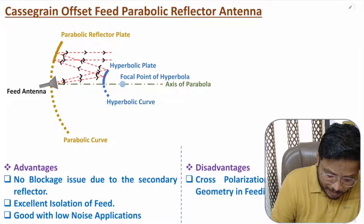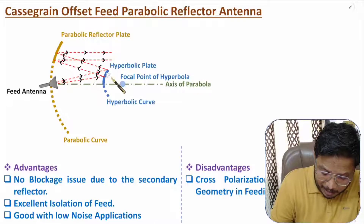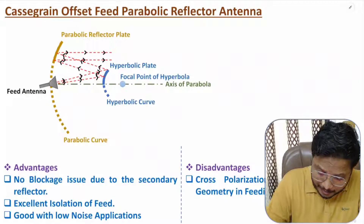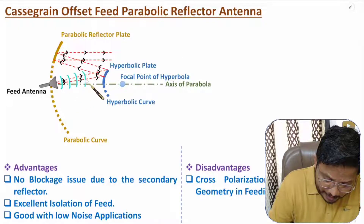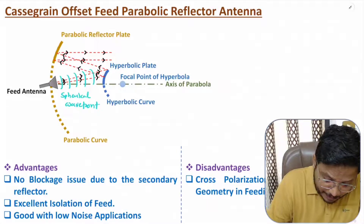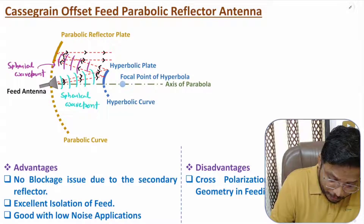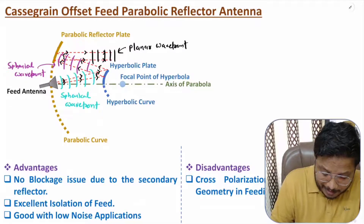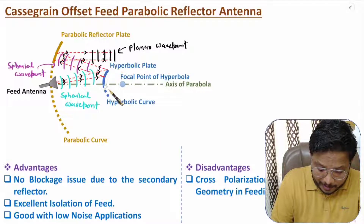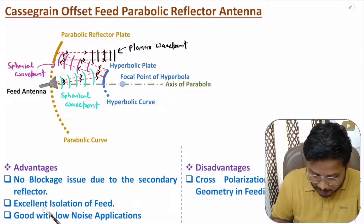In the Cassegrain offset feed design, the feed is at the center on the axis of parabola, and we have a hyperbolic plate. The feed is inclined in one direction and transmits spherical wavefronts. After reflection from the hyperbolic plate, we again have spherical wavefronts, and the parabolic reflector plate converts these spherical wavefronts into planar wavefronts. There is no blockage from the secondary hyperbolic reflector plate, and there is excellent isolation of the feed.